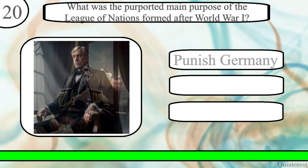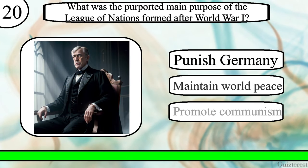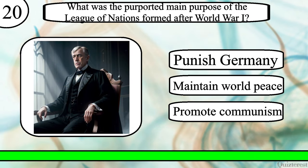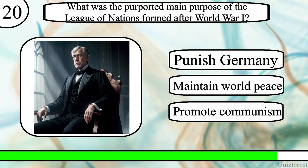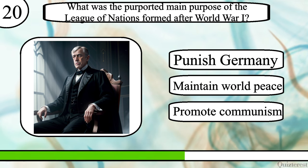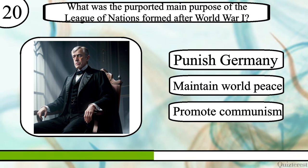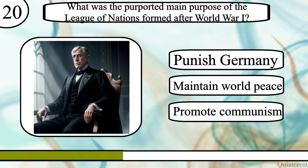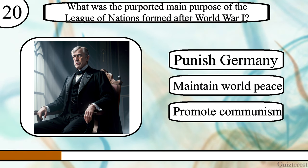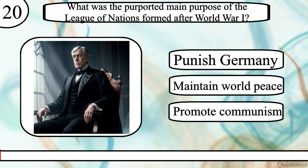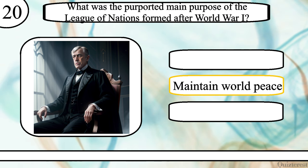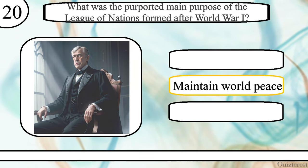Question 20. What was the purported main purpose of the League of Nations formed after World War I? Punish Germany, maintain world peace or promote communism? The correct answer is maintain world peace.